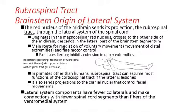More specifically, the rubrospinal tract facilitates flexion and inhibits extension in the upper extremities. This diagram shows what is known as decorticate posturing, sometimes seen following brain trauma or brain swelling. What is happening is a facilitation of the rubrospinal tract, producing flexion of the upper extremities — when the rubrospinal tract is active, it facilitates this flexion and the arms draw upward, as you see here.